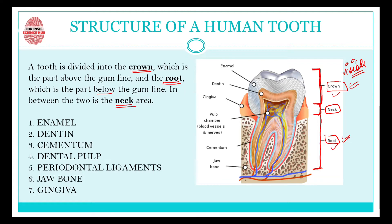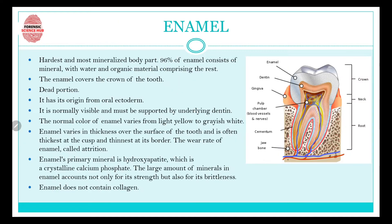A tooth comprises of enamel, dentine, cementum, dental pulp, periodontal ligaments, jawbone, and gingiva. All these structures will be discussed one by one. Let's get started with enamel first.